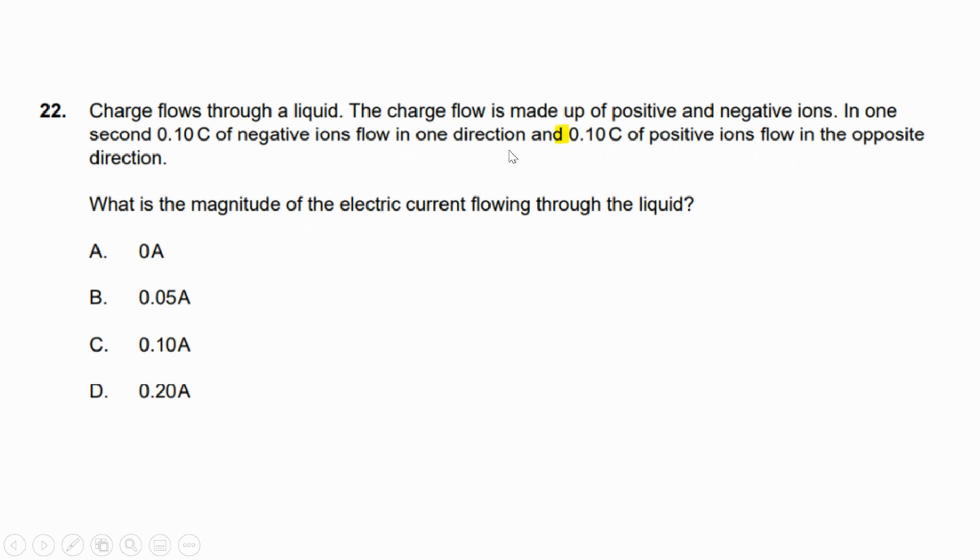The keyword here is that we have to add these positive and negative ions together to find out the amount of electric charges passing through. We're looking to find out the electric current. The formula for electric current is Q over t, the electric charge quantity divided by the time taken.